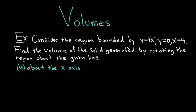Consider the region bounded by y equals the square root of x, y equals 0, and x equals 4. Find the volume of the solid generated by rotating the region about the given line. Part A says about the x-axis. Let's go ahead and carefully work through this solution.